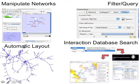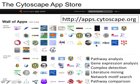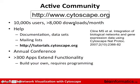By default Cytoscape handles network visualization and some analysis, but most analysis comes from downloading apps. Basic things you can do include manipulating networks, filtering and querying, laying out the network, and searching databases. The real power comes from apps — there's a Cytoscape app store with over 300 apps that currently extend the system's functionality. There's also a large community of users, not just in biology.